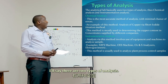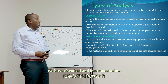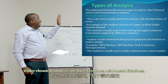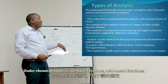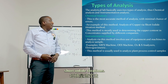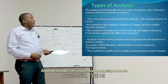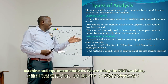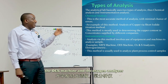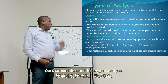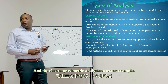There are two types of analysis: chemical and instrumentation. Under chemical analysis, we have titrations — acid-base titrations and iodometric titrations. Under instrumental analysis, we have machine and equipment analysis using the XRF machine, the OES machine, the oxygen analyzer, and electrogravimetric analysis.